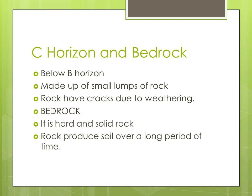C horizon is present below the B horizon and is made up of small lumps of rock. These rocks are formed due to the weathering process. Bedrock is at the lowermost level — it is very hard and solid rock, and it also produces soil over a long period of time.